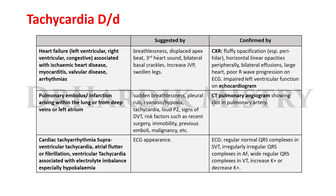When tachycardia occurs with breathlessness, displaced apex beat, third heart sound, bilateral basal crackles, increased jugular venous pressure, and swollen legs, confirmed by chest X-ray showing fluffy opacification in the perihilar region, horizontal linear opacities peripherally, bilateral effusions, large heart, poor air wave progression on ECG, and impaired left ventricular function on echocardiogram — then it is due to heart failure, whether left ventricular, right ventricular, or congestive cardiac failure, associated with ischemic heart disease, myocarditis, valvular disease, or arrhythmias.